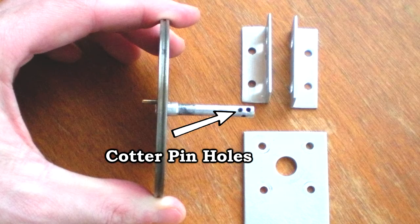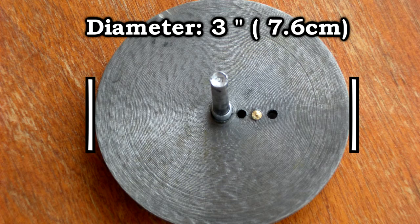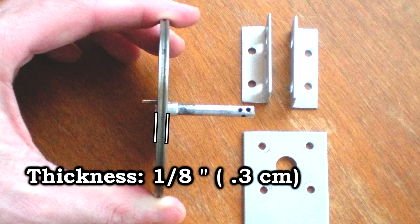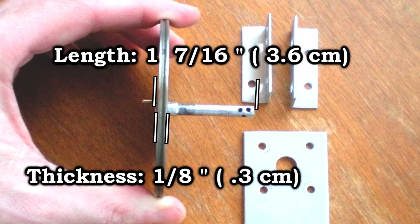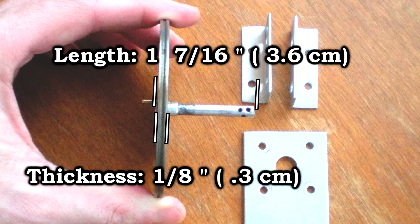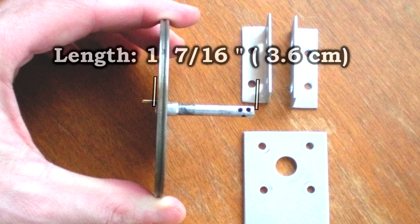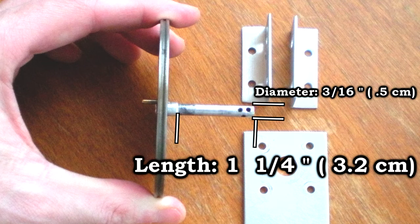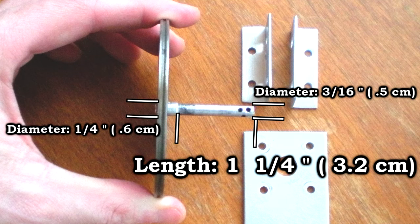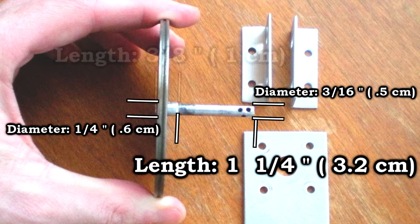This flywheel is made out of steel and has an aluminum shaft running through it. The diameter of the flywheel is three inches. Its thickness is one eighth of an inch. The aluminum part of the flywheel is one and seven sixteenths of an inch long. It has two diameters. The skinnier part is three sixteenths of an inch in diameter and is one and one quarter inch long. The thicker portion is a quarter of an inch in diameter and is three eighths long.